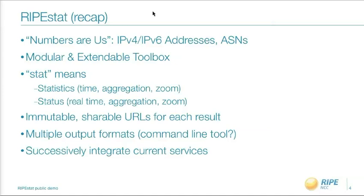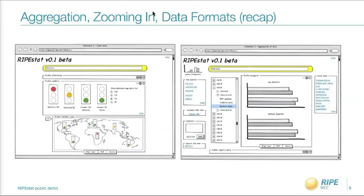Another important point will be multiple output formats, so you can use the data on our service for different purposes. We have a transparent and agile development process, which means we add new features as they are ready. On the screen mockups you can see ideas like data aggregation over prefixes or aggregation over continents, navigation through data, and the ability to get data in different formats like plain text, PDF, CSV, or others.